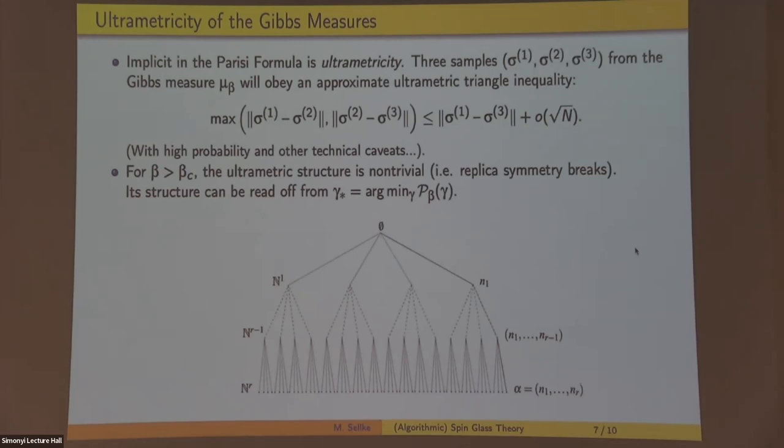And there's a transition. Is this ultrametric space kind of trivial? So the distance between these points are all the same? Or is it non-trivial? This is called replica symmetry breaking in this case. And you can read off these properties from the variational problem. So at low temperature for large beta, you'll kind of have a many layered hierarchy of nested clusters, because that's what happens for a non-trivial ultrametric space. So here the picture is that these leaves at the bottom, these are the actual points in your Gibbs measure. These are points on the cube. And these higher layers are just indicating levels of clusters.